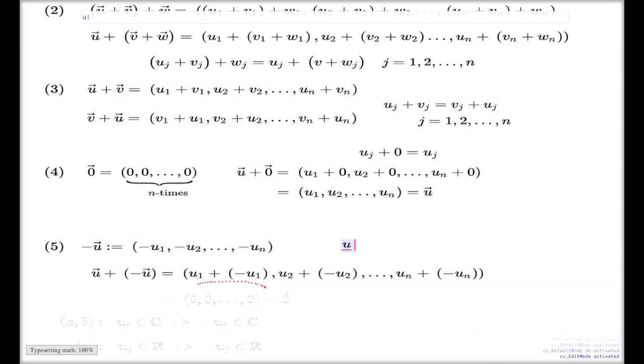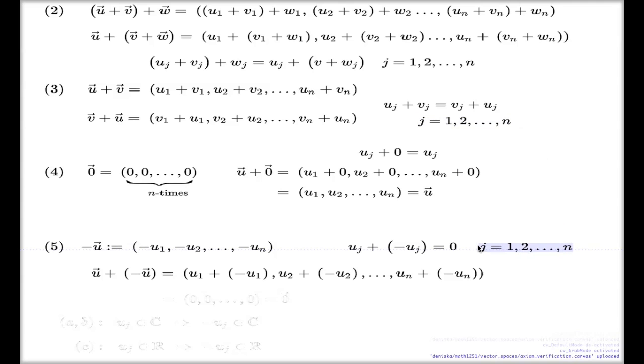We know this for numbers that uj plus negative uj, these two add up to the number zero. And that is true, again, for every j between one and n. And that's why we end up with a zero vector, as suggested by the axiom number four.